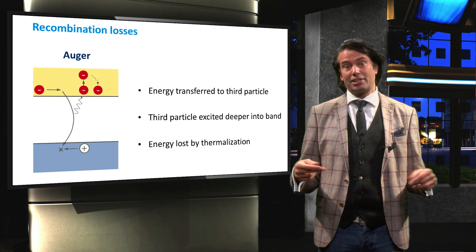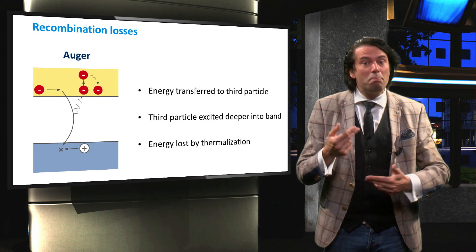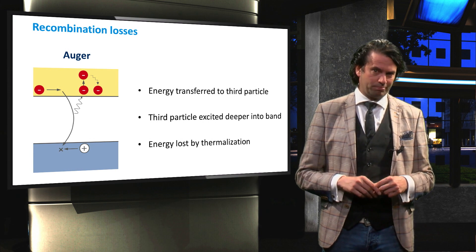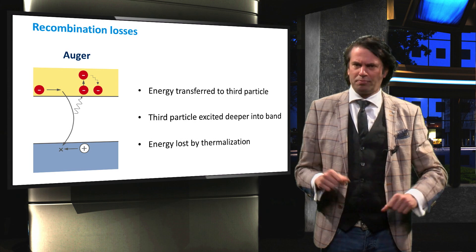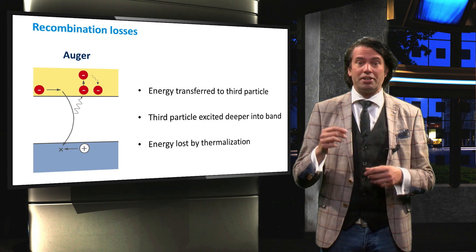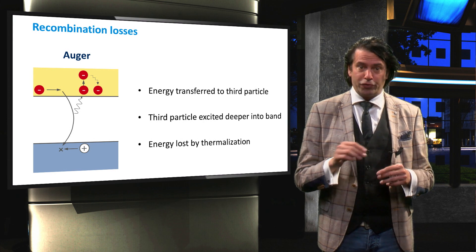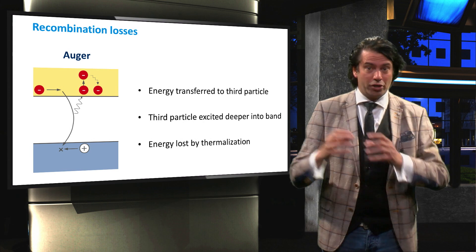The next process through which excited charge carriers can recombine is Auger recombination. Auger recombination is a three-particle process. The momentum and energy of the recombining hole and electron are transferred to another electron or another hole.